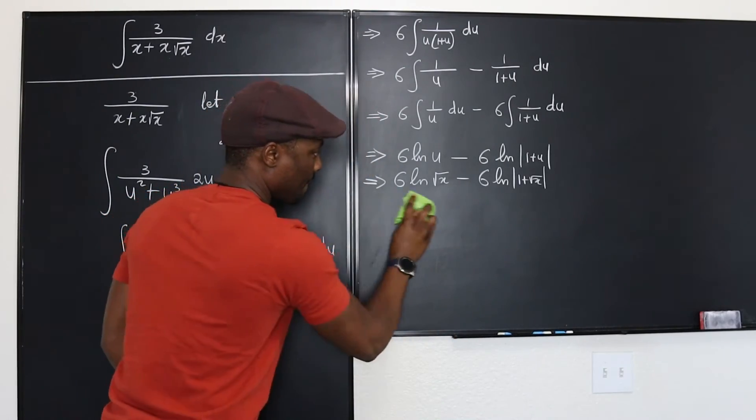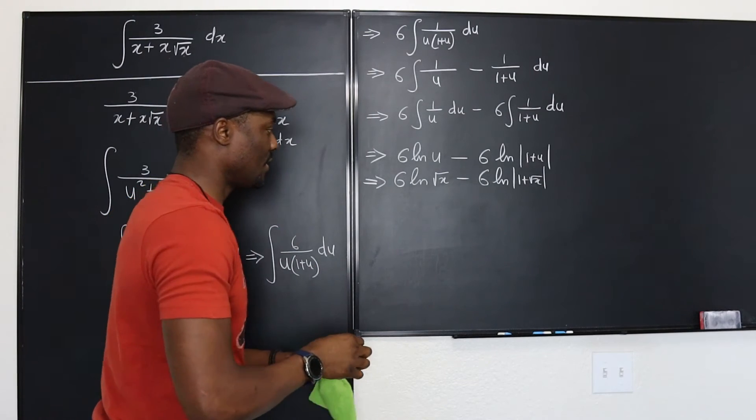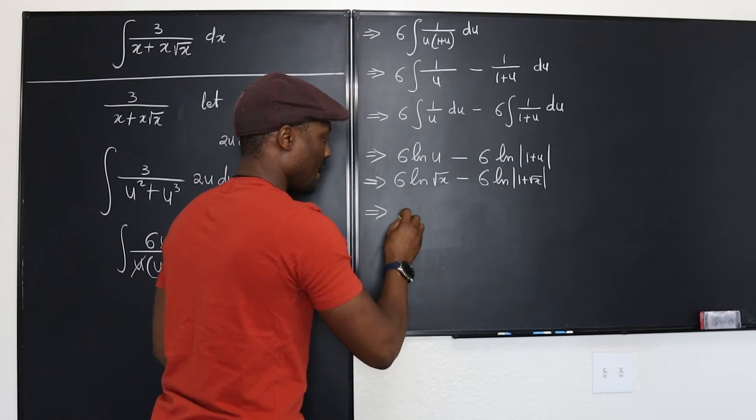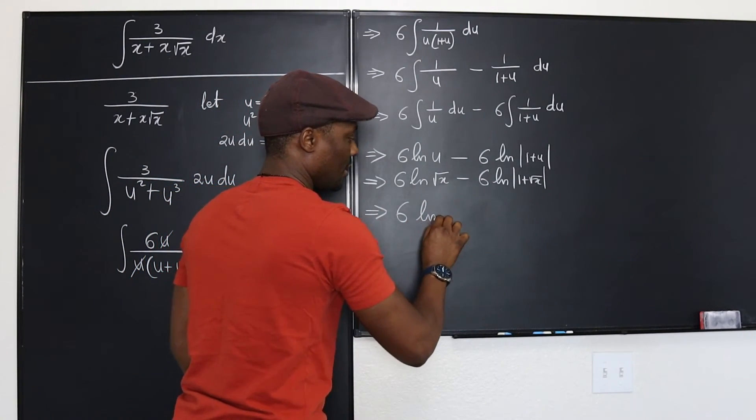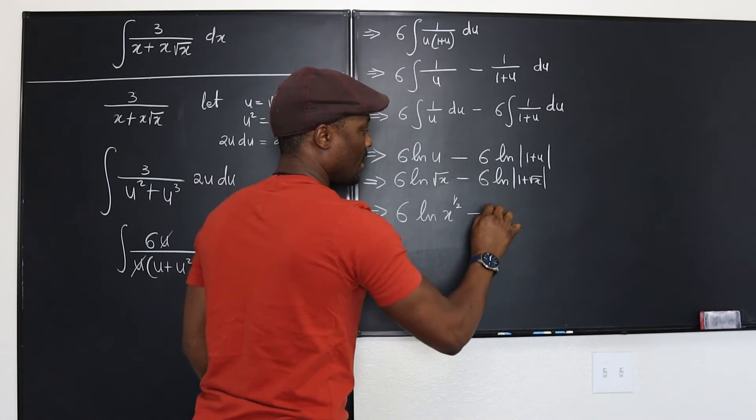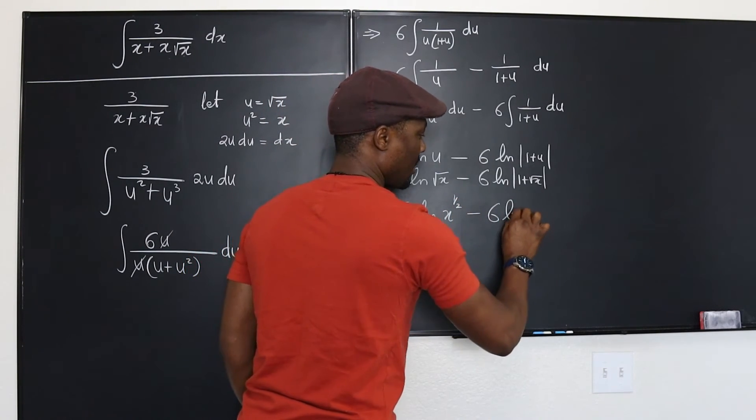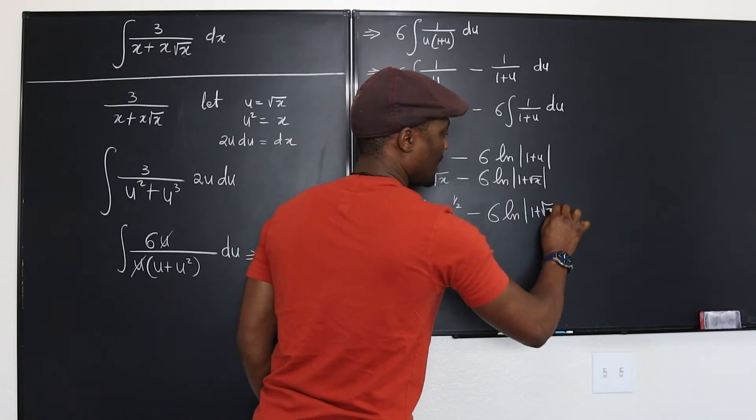Let's do it. So this is going to be 6 ln x to the 1 over 2 minus 6 ln 1 plus square root of x.